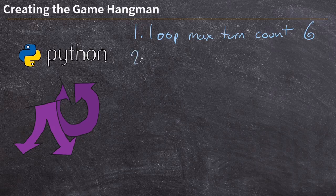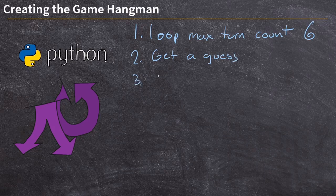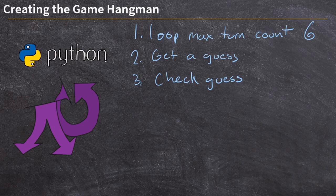Next, as we start our loop, the first thing in each loop we're going to do is get a guess from the player. And once we have that guess, we need to check if it's correct or not — we need to see if that letter they guessed is inside of the secret word. If it's not inside of the secret word, then we need to increase the number of wrong counts that we have, increasing towards that six.